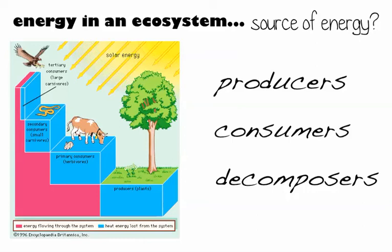Decomposers transfer energy from dead things back into the soil, so the circle of life continues. As energy moves up the food chain, there is less and less of it. Only 10% gets to the next organism in the food chain because each organism uses 90% of the energy they get from food for metabolism. Only 10% of that energy gets transferred over.